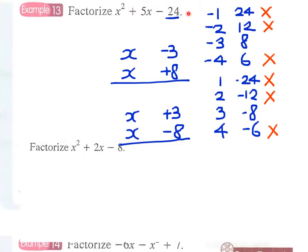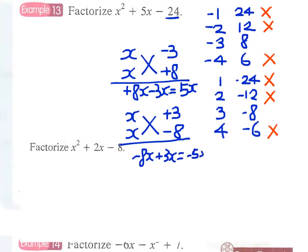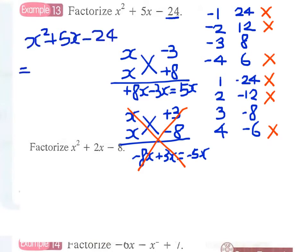We must always remember that if the constant term is negative, one factor should be positive and the other negative. Now we do the cross multiplication: we get plus 8x minus 3x, giving plus 5x. In the second pair, minus 8x plus 3x gives minus 5x. So obviously the second pair does not work, and therefore we write our answer: x² + 5x − 24 = (x − 3)(x + 8).